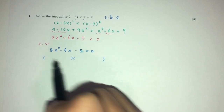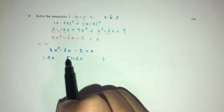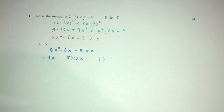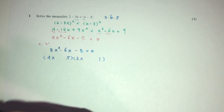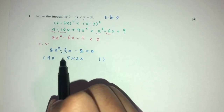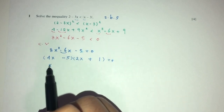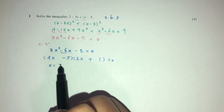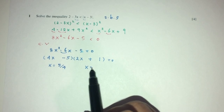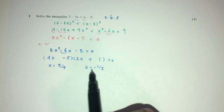By factorization, that will be 4x times 2x. 5 is just 5 times 1. Now, if you don't know how to factorize, you can always use your formula. We have to have minus 6, so that will be minus 10 plus 4. So x will have to be 5 over 4, and x will have to be minus half. So these are the critical values of that equation.